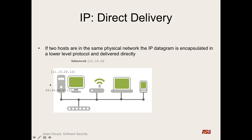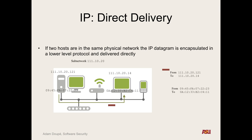So the idea is we have a computer here, let's say 11.10.21, with a physical address, that wants to send a packet to 10.111.10.20.14 which has some physical address. We want to send this IP packet from one machine to the other, but really we have to encapsulate that in a link layer packet. We can't just send this IP packet out on the wire and expect anything to happen. So really, we have to encapsulate it in another packet that is from our physical address to their physical address, and then we can actually go through it.